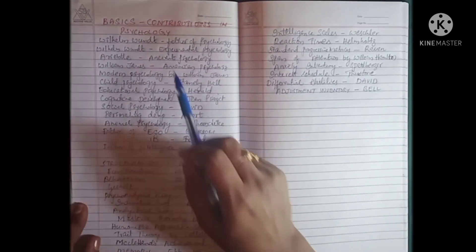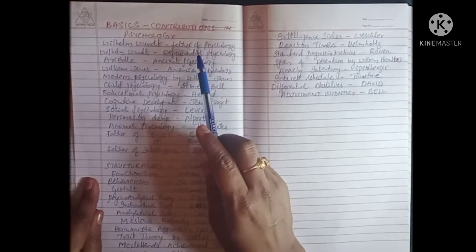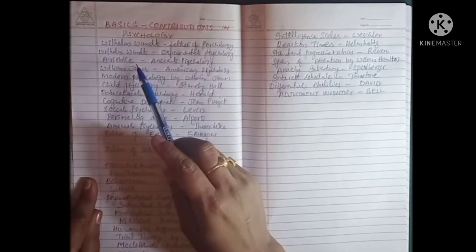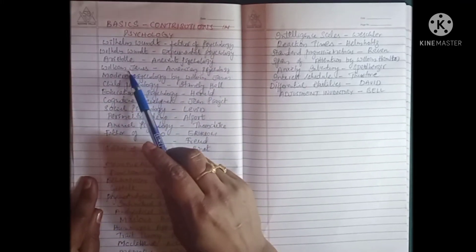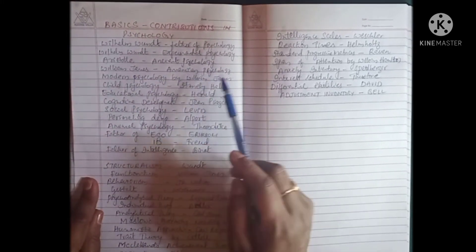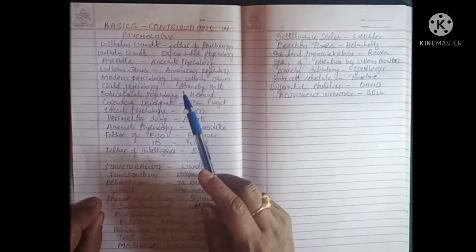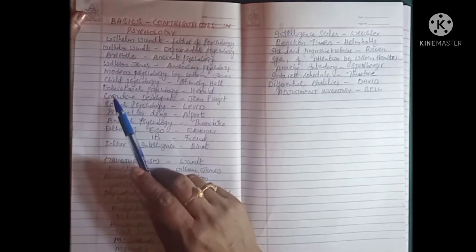Coming to basics and contributions in psychology: William Wundt is father of psychology and experimental psychology. Aristotle is called father of ancient psychology. William James is father of American psychology and modern psychology. Child psychology by Stanley Hall. Educational psychology by Herbart.